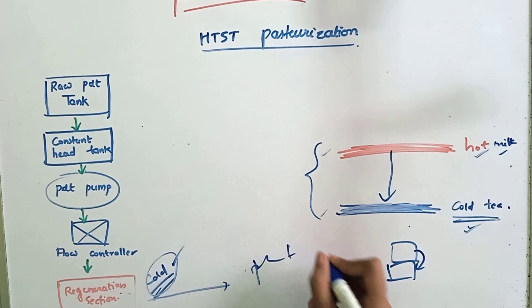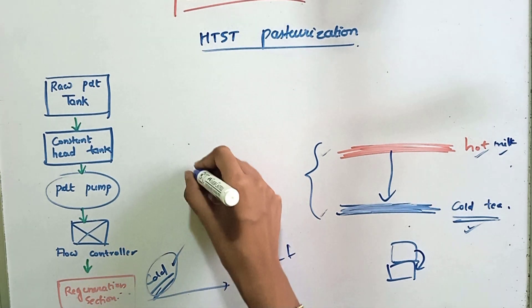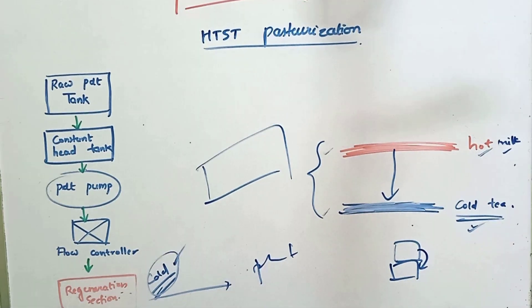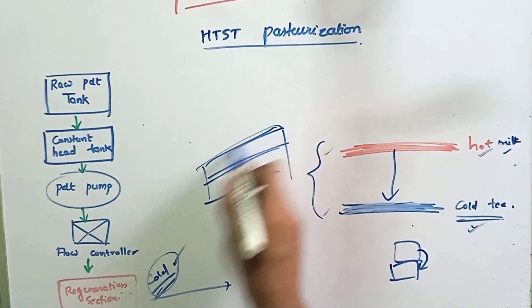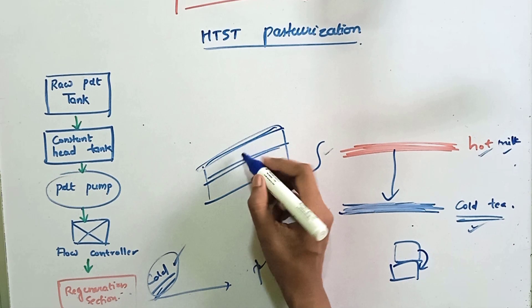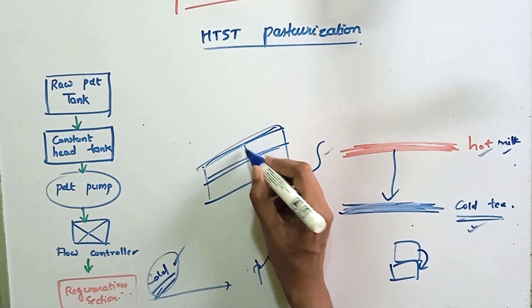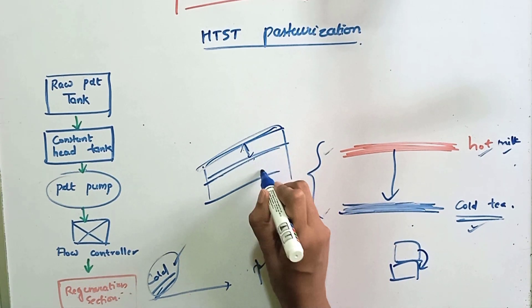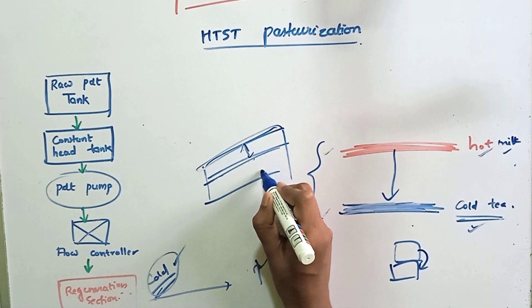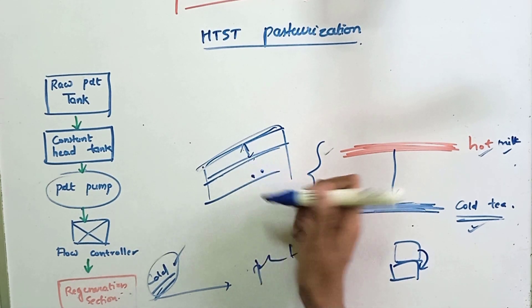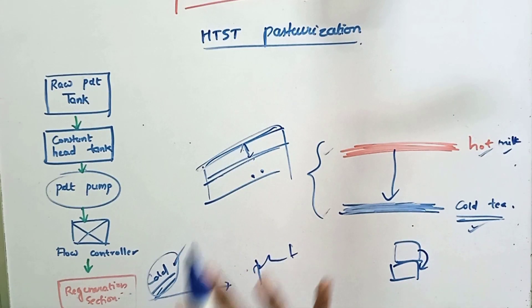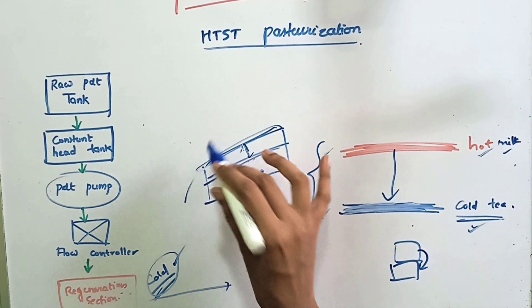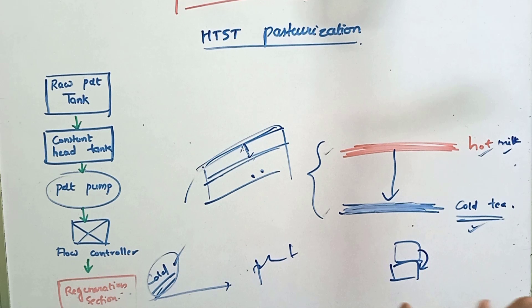In pasteurization, regeneration is carried out with the help of a plate heat exchanger. In a plate heat exchanger, a hot fluid is passed through one side of the plate and a cold fluid through the other side. The hot and cold fluids do not come in direct contact — both come in contact with the plate. Heat is transferred through the plate. In HTST pasteurization, we normally use a plate heat exchanger for the purpose of regeneration.